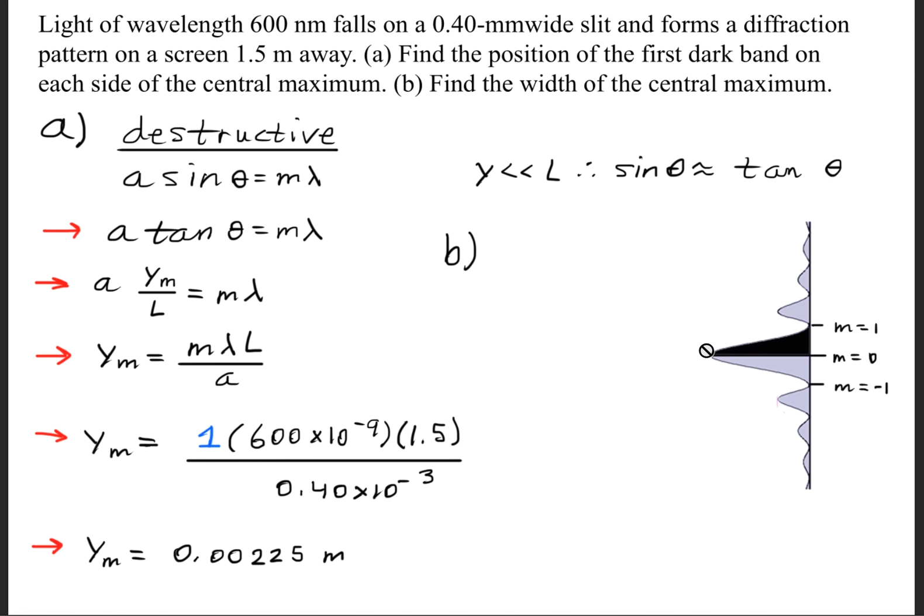Where I've highlighted in black is the distance we found for part A. Now for part B, to solve for the width of the central maximum, we simply need to find the other half of that distance. We need to double what we got from part A so that we get 0.0045 meters or 4.5 millimeters.